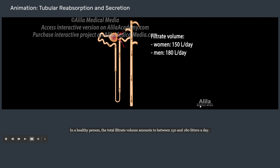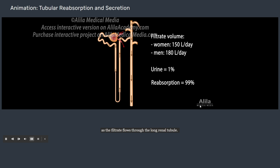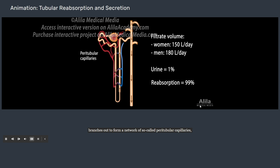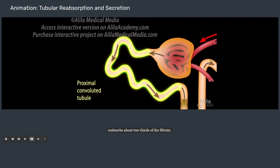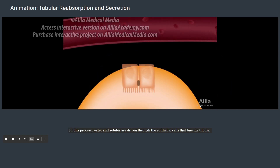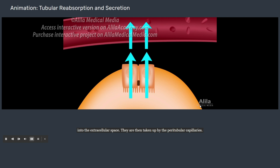In a healthy person, the total filtrate volume amounts to between 150 and 180 liters a day. However, only about 1% of this is excreted as urine. The remaining 99% is reabsorbed back to the blood as the filtrate flows through the long renal tubule. This is possible because the efferent arteriole, after exiting the Bowman's capsule, branches out to form a network of peritubular capillaries which surround the renal tubule. The first part of the tubule, the proximal convoluted tubule, reabsorbs about two-thirds of the filtrate. Water and solutes are driven through the epithelial cells that line the tubule into the extracellular space, then taken up by the peritubular capillaries.